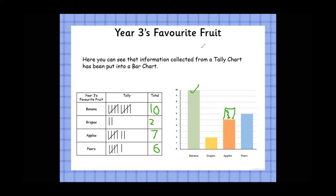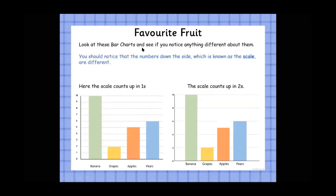Moving on: look at these bar charts and see if you notice anything different about them. You should notice that the numbers down the side — known as the scale — are different. We can represent the same total amounts of bananas, grapes, apples, and pears using a different scale. Here the scale goes up in ones: one, two, three, four, five, six, seven, eight, nine, ten.